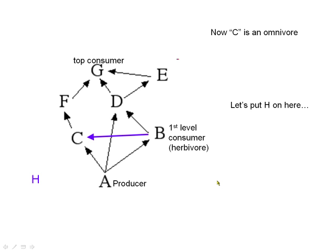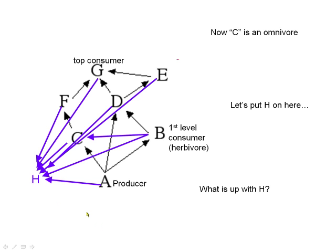Let's add letter H to add some complexity. If H eats only plants, H is an herbivore just like B and C were. But what if H eats plants and also eats the top consumer, and what if everybody is eating H? That makes H an organism that eats all the other organisms — and such a thing does exist. We call them decomposers. So I would ask you to interpret a food web like this and make predictions about what each letter represents.